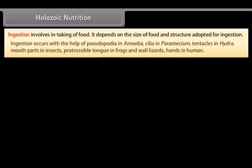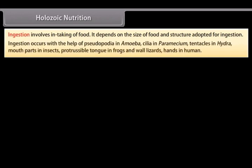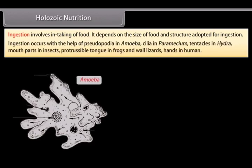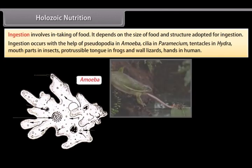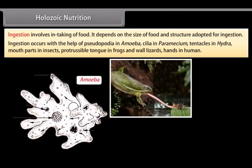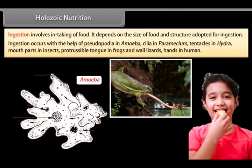Ingestion involves intaking of food. It depends on the size of food and structure adopted for ingestion. Ingestion occurs with the help of pseudopodia in amoeba, cilia in paramecium, tentacles in hydra, mouthparts in insects, protrusible tongue in frogs and wall lizards, and hands in humans.